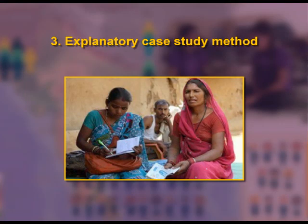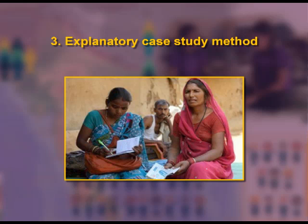Third, explanatory case study method. This type is used to seek answers to questions which can explain presumed causal links in real-life interventions. It helps show data in a better way and describes causal investigation. For example, an investigator collects information from a lady of a rural area who achieved reading and writing skills through an adult educational scheme. She is also an account holder of Grameen Bank and does not need help from others for banking activity.